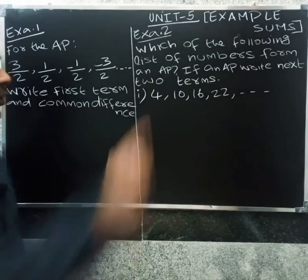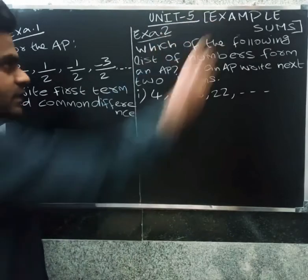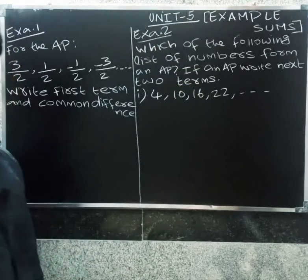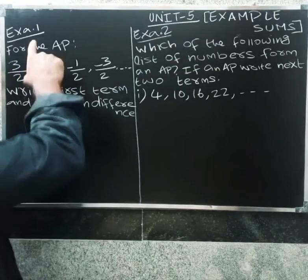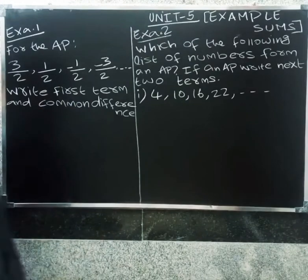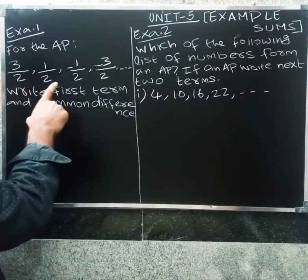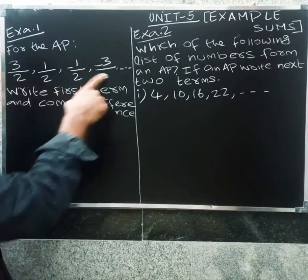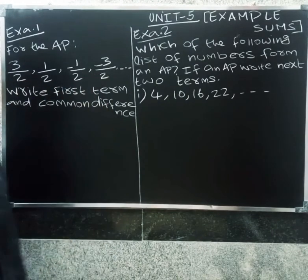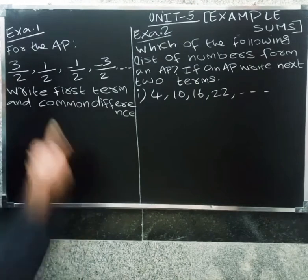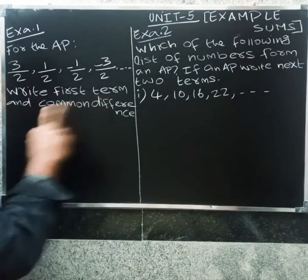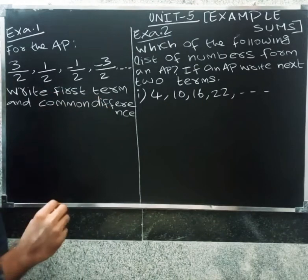Welcome friends. I am going to show you my unit file examples. So first, Example 1: for the AP, 3 by 2, 1 by 2, minus 1 by 2, comma minus 3 by 2 — write the first term and common difference.